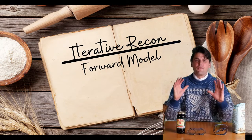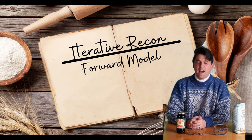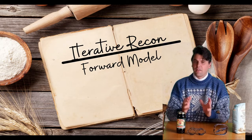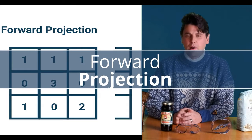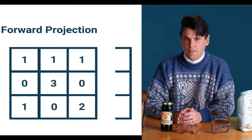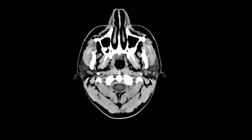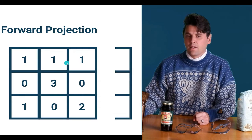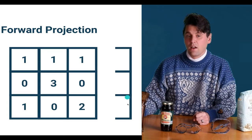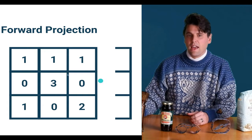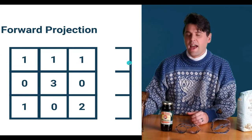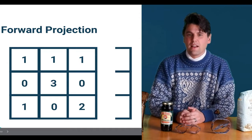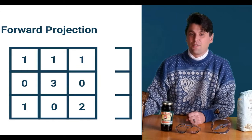The first ingredient in iterative reconstruction is a forward model, so we need something that's going to help us simulate how the x-rays pass through our body during an acquisition. If you haven't seen our video on filtered back projection, definitely check that one out after watching this video. For a projection you can think about a simple image matrix. Here I have just a three by three image matrix. Obviously your matrix is usually much bigger than this, 512 by 512 or larger than that typically. The idea here is that if we have just these three values, we want to perform a forward projection and our detector is right here.